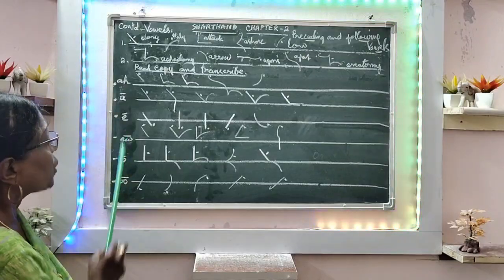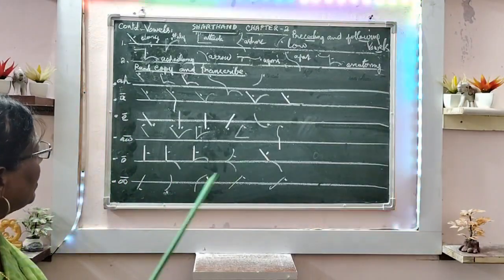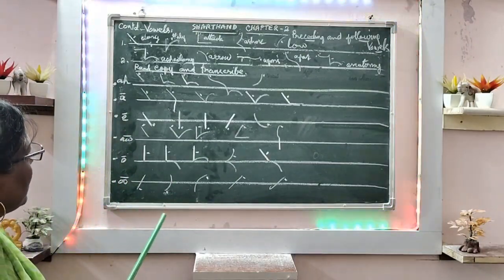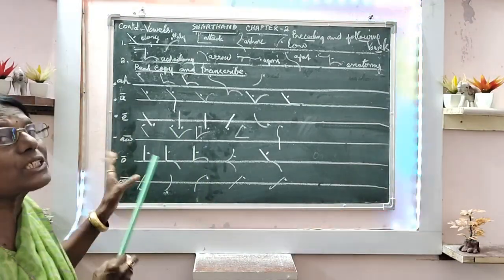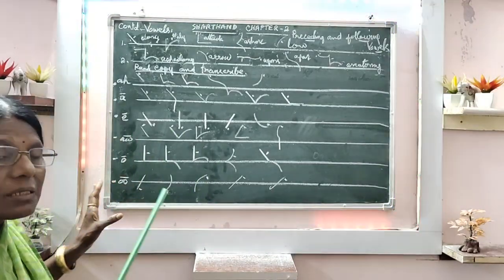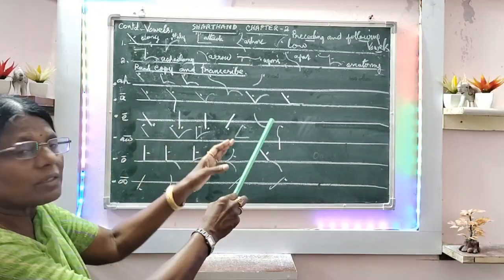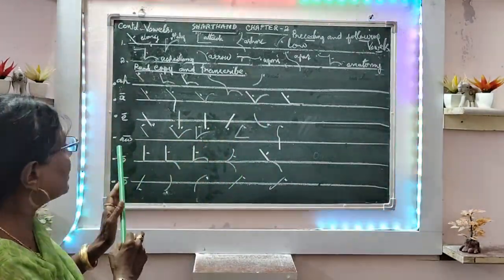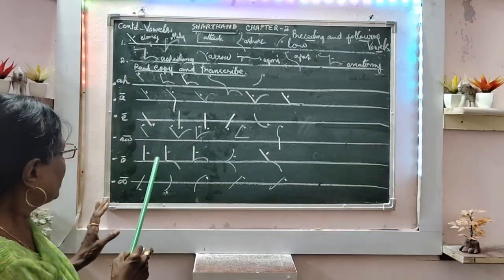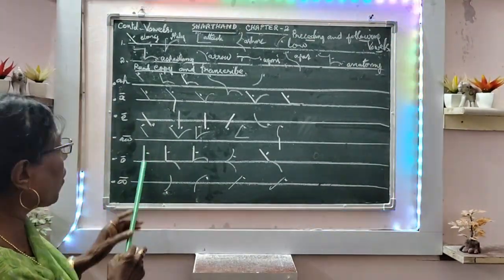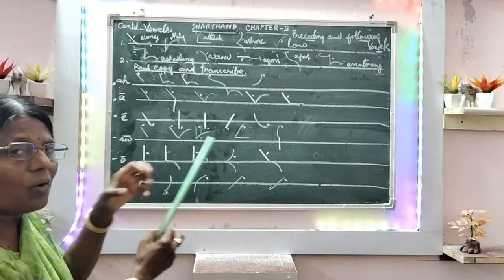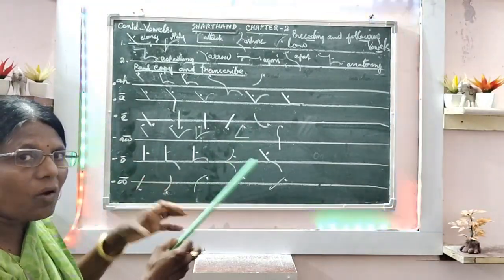And the next is dash vowels, long vowels. So far, dot vowels. And now, dash, deep dash. Here, D, O, door. Door. Atomic sing, door.